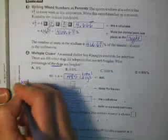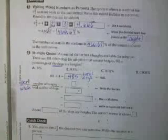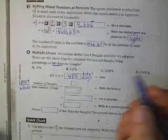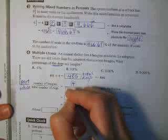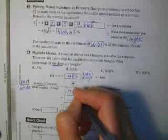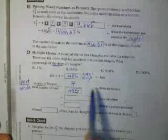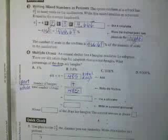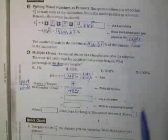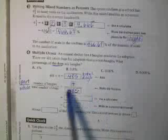When we write our ratio we start out with number of beagles to total number of dogs. Again, this is a variation of the part to whole that we have talked about in class some. So the part of the dogs or the number of the dogs that are beagles is four. The total number of dogs altogether is 485. And that's just a smudge on your paper. That's not a point or anything.